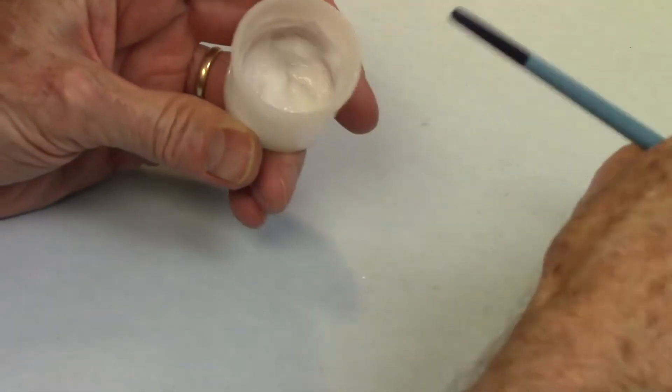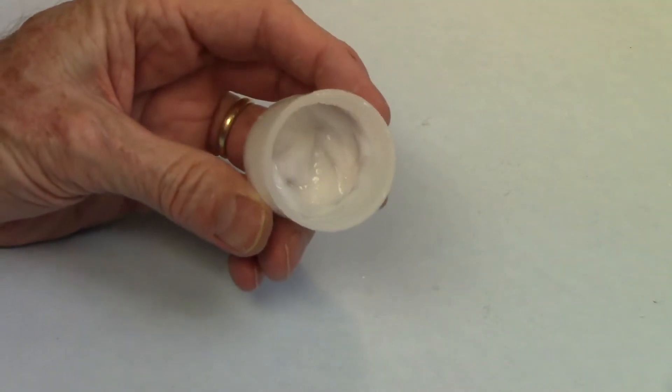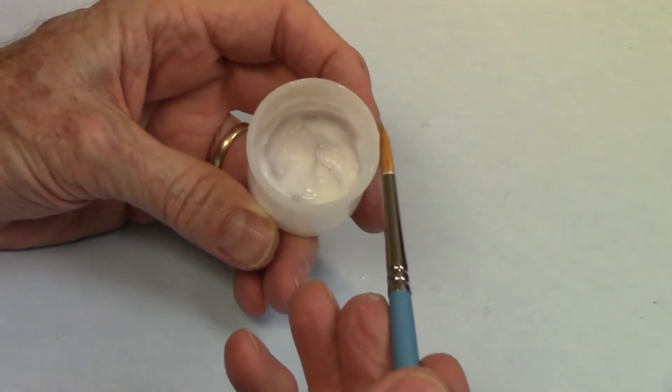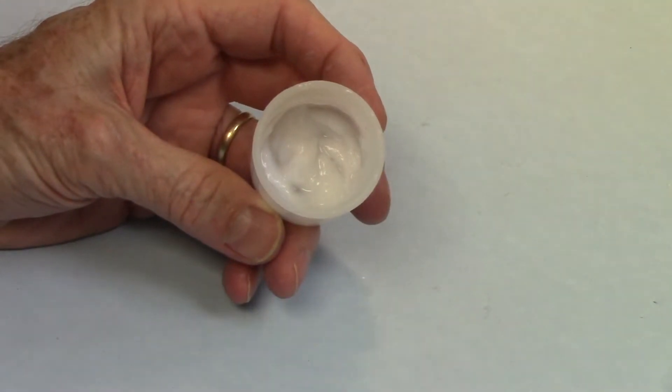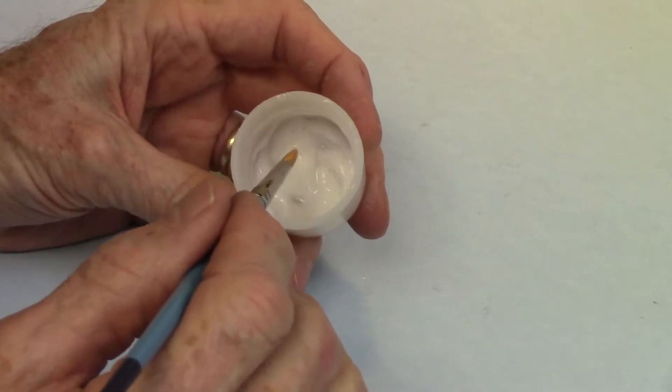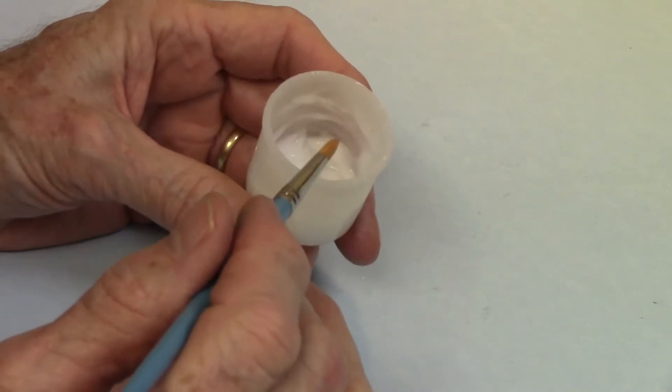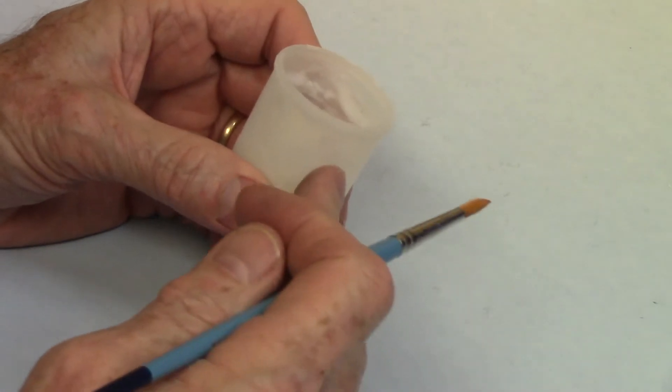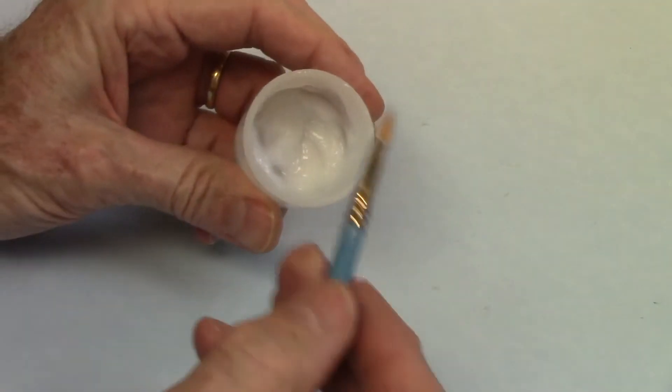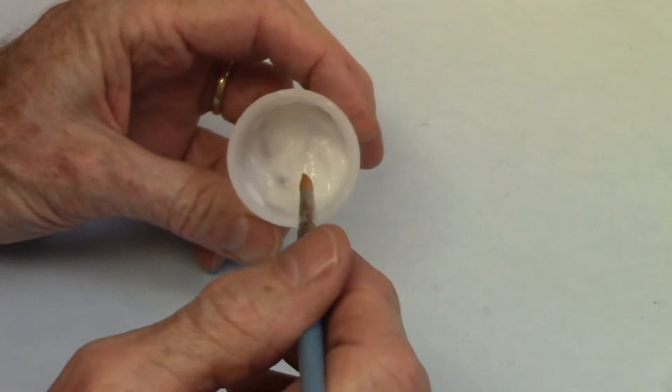Alright, now the flux. You use clean flux in a clean container and a clean brush. Okay, you do not contaminate the reagent container. That's what this is. It has the flux from the manufacturer or however you buy your supplier.